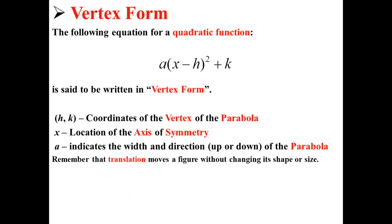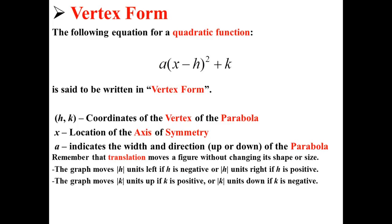Remember that translation moves a figure without changing its shape or size. The graph moves absolute value h units to the left if h is negative, or absolute value h units to the right if h is positive. The graph also moves absolute value k units up if k is positive, or absolute value k units down if k is negative.